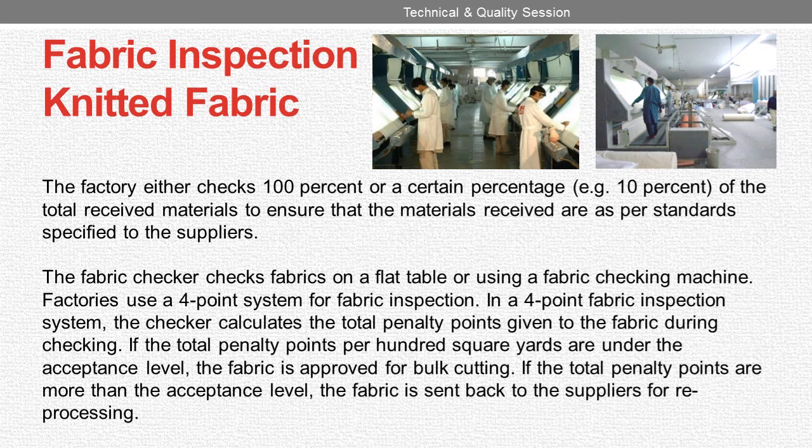Factories use a 4-point system for fabric inspection. In a 4-point fabric inspection system, the checker calculates the total penalty points given to the fabric during checking. If the total penalty points per 100 square yards are under the acceptance level, the fabric is approved for bulk cutting. If the total penalty points are more than the acceptance level, the fabric is sent back to the supplier for reprocessing.